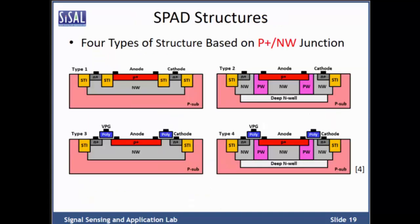This slide shows four types of structures based on P-plus N-well junction. The difference between types is the guard ring structure. Type 1 is designed with STI, which aims to isolate the multiplication region and limit horizontal diffusion. Type 2 uses a P-well guard ring implant, where low-concentration doping P-well is expected to lower the electric field at the junction periphery to prevent premature edge breakdown. Type 3 and type 4 are poly-gated structures, as referenced in the literature.